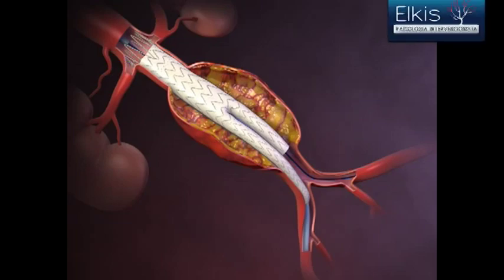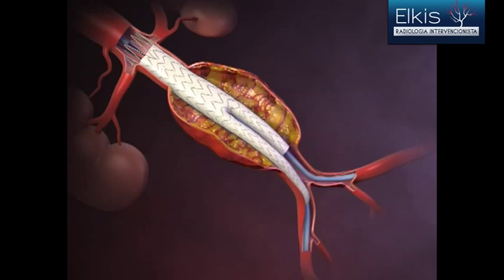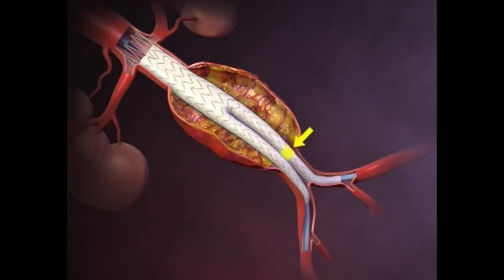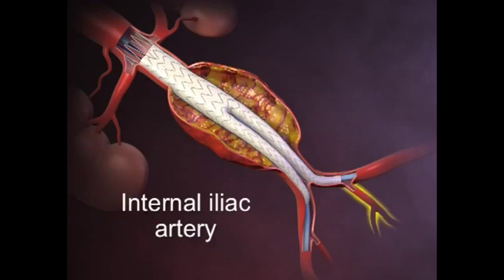The contralateral limb component of the stent graft is then introduced and deployed with overlap sufficient to prevent leakage around the junction of the main body of the device and the proximal end of the limb, and so that the distal end of the contralateral limb is located superiorly to the internal iliac artery.